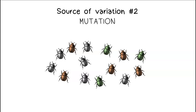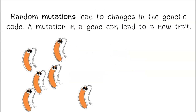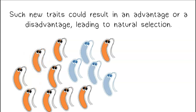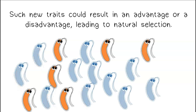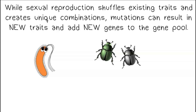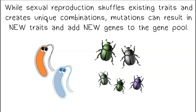Source of variation number two is mutation. Random mutations lead to changes in the genetic code. A mutation in a gene can lead to a new trait. Such new traits could result in an advantage or a disadvantage, leading to natural selection. Mutation is the ultimate source of variation in all species, both sexual and asexual. While sexual reproduction shuffles existing traits and creates unique combinations, mutations can result in new traits and add new genes to the gene pool.